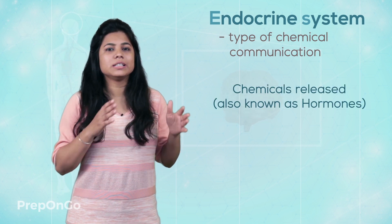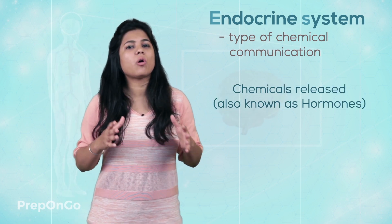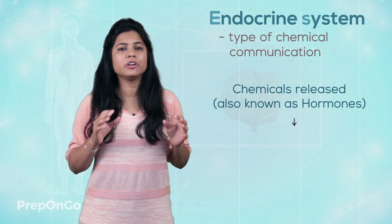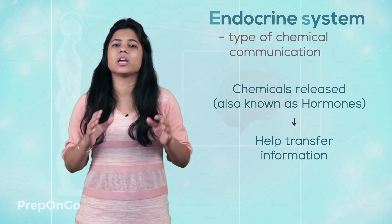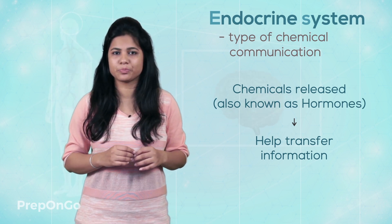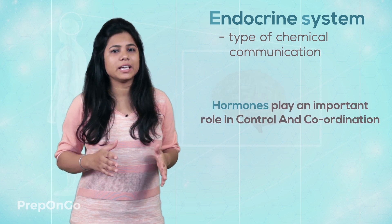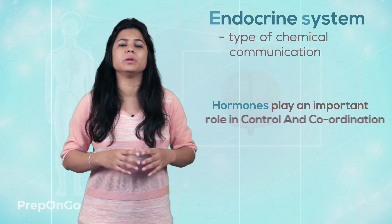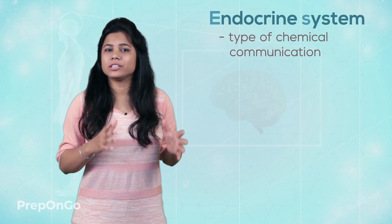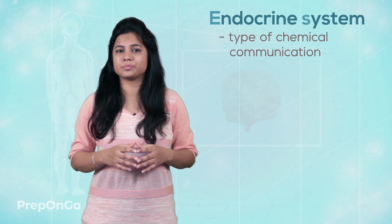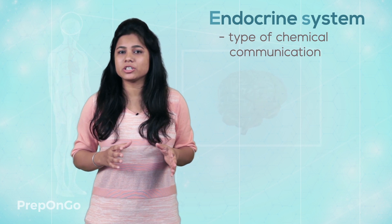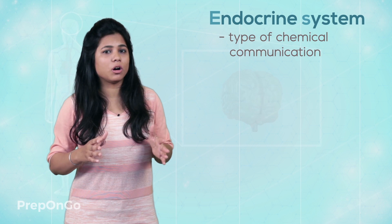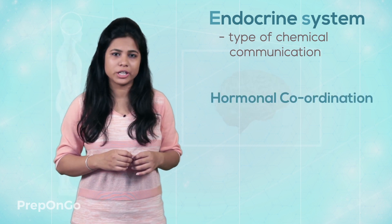Now, these chemicals which are released are also called as hormones. These hormones play an important role in transferring the information to each and every cell regardless of the nervous tissue. So we can say that hormones play an important role in control and coordination of a human body. The chemical communication transmits information through hormones, and this is why we call this system hormonal coordination.